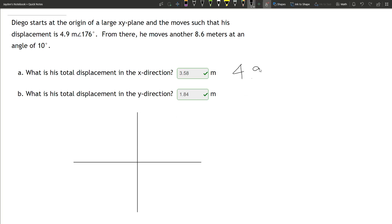4.9 meters at 176 degrees. We can break that up using trigonometry, because let's say a line, this is 176. We can see this is a right triangle right here.